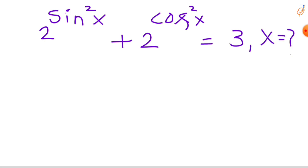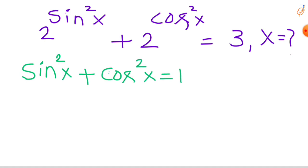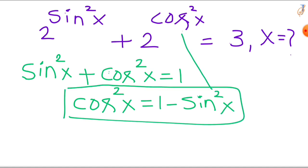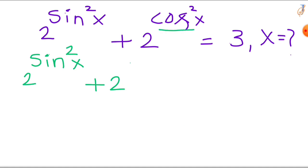This equation combines exponential and trigonometric functions. If you are ready to challenge your math skills and learn something new, let's dive in. We know that sin²x plus cos²x equals 1. From this, we can write cos²x equal to 1 minus sin²x. Substituting this into our original equation, cos²x turns into 1 minus sin²x, and that is equal to 3.